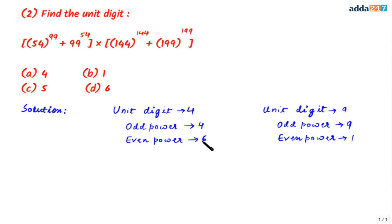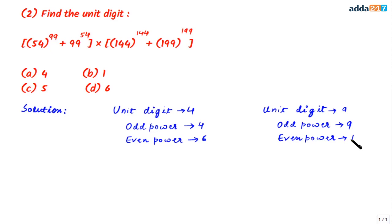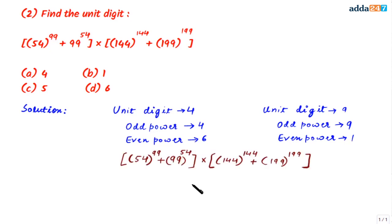The other trick is: if a number has unit digit 9 and is raised to an odd power, the unit digit in the answer is 9; if raised to an even power, the unit digit in the answer is 1. Now let's apply these rules to simplify the given expression.